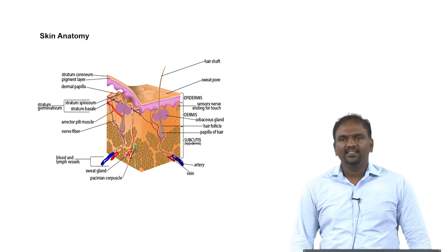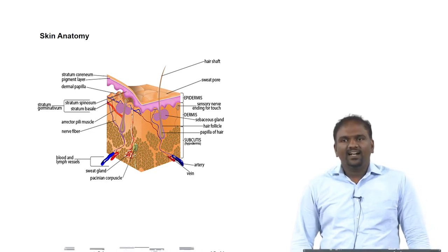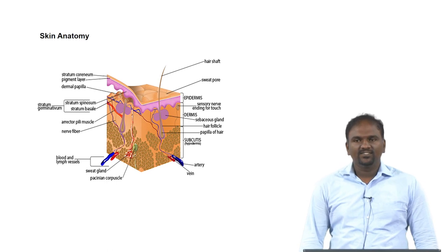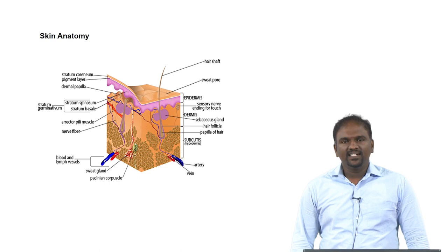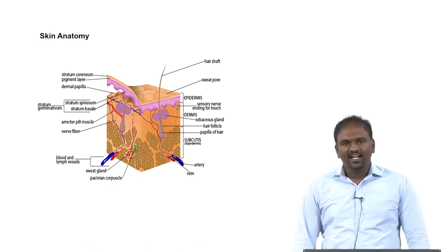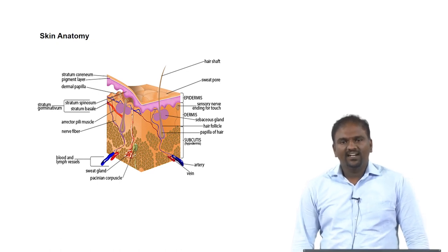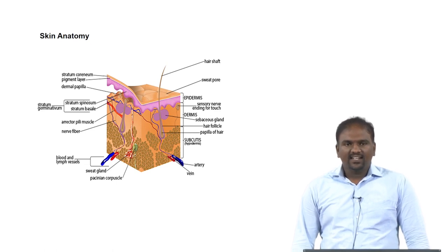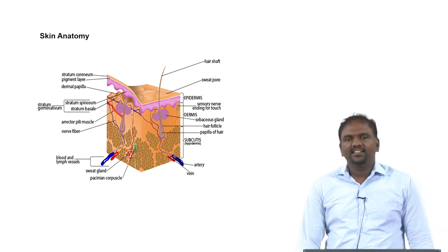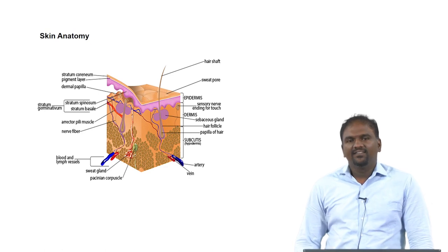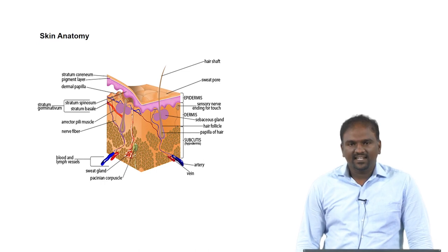The skin has many parts. Attached with the hair follicles, we have the sebaceous gland. The sebaceous gland produces sebum, which gives lubrication for the hair follicle, makes the skin waterproof, and acts as a primary defense system. Then attached to the sebaceous gland, we have the erector pili muscle, which is responsible for the pulling of hair. When goosebumps happen, that pulling of hair happens because of that muscle.